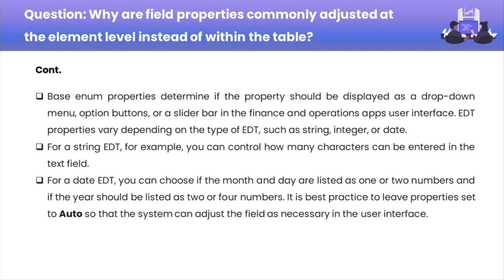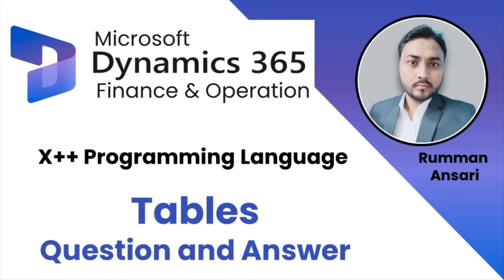So I hope now this question is clear — why are field properties commonly adjusted at the element level instead of within the table. Thanks for watching this video. See you in the next one. Till then, take care, bye bye.